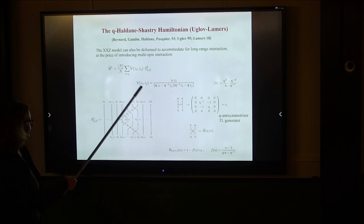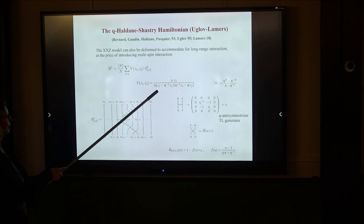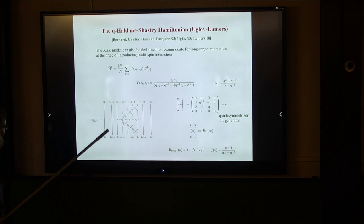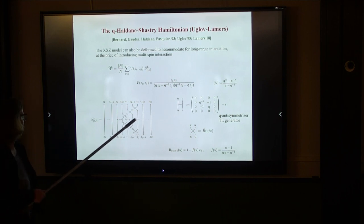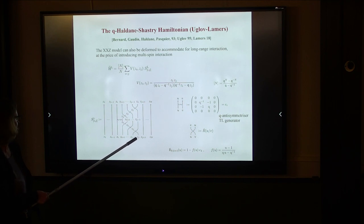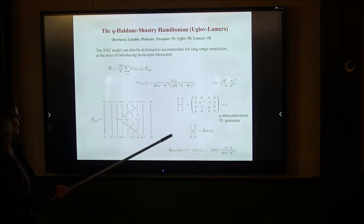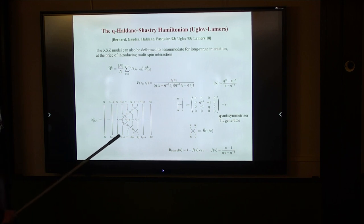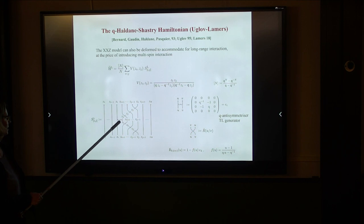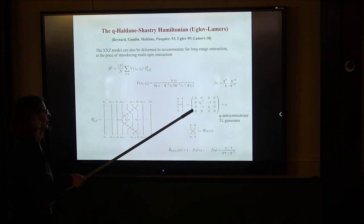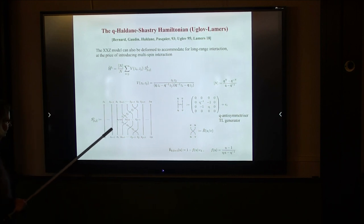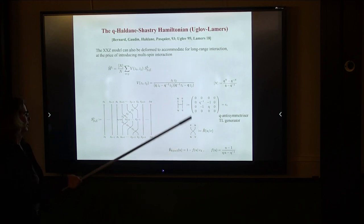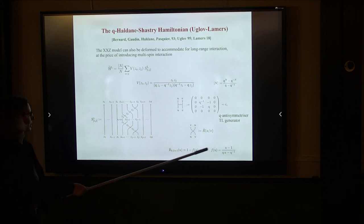Now we have a potential where every spin interacts with every other spin, but the double pole is split into simple poles. The spin interaction can be represented graphically: you transport spin j to position z_{i+1} using the R-check matrix of XXZ, interact with spin i using the anti-symmetrizer, then bring it back to its place using the R-matrix, which can be written in terms of the Temperley-Lieb generator by a simple formula.